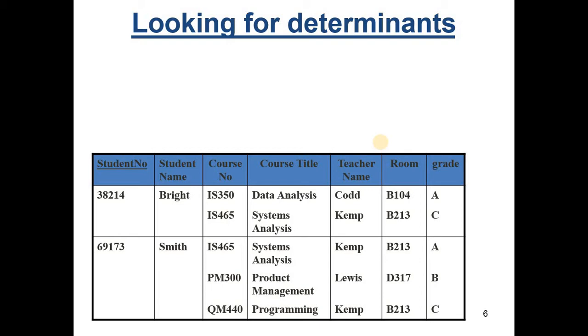So here is my data. And looking at this data, I can see that certain attributes relate to each other. For example, the student number. Clearly, it's the determinant for the student name. Given a student number, there's only one possible name. And a few other ones are like that.